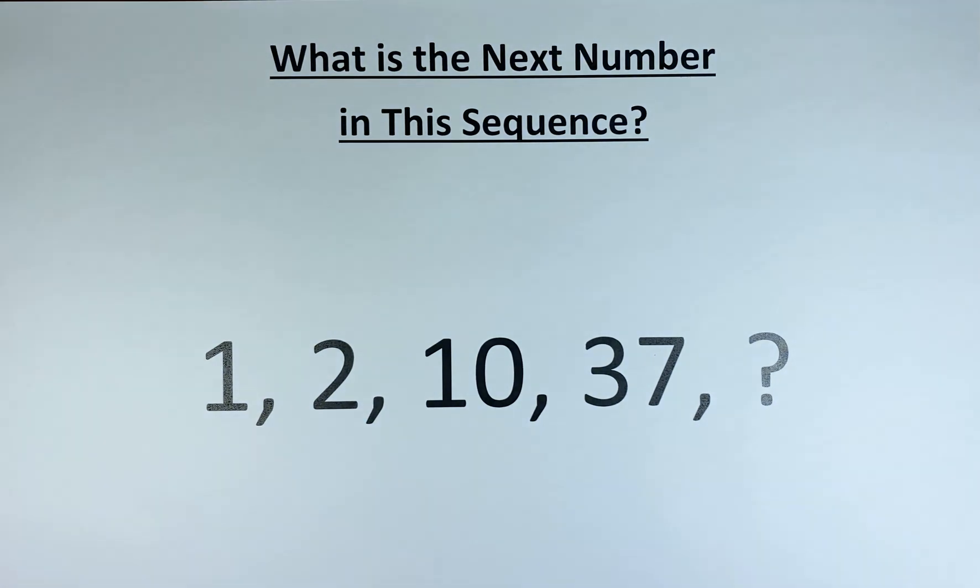If you look at the numbers there, it's more like a multiplication type because it's increasing at a quite consistent rate. So: 1, 2, 10, 37, and a question mark.